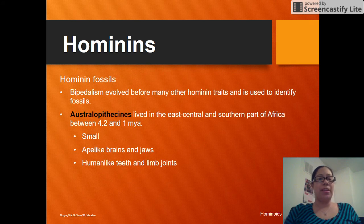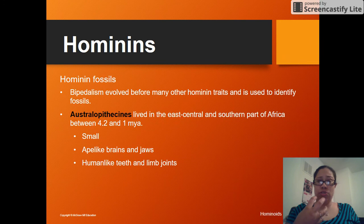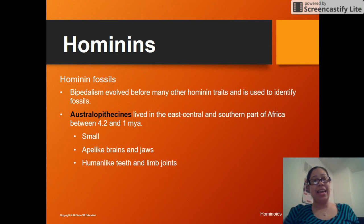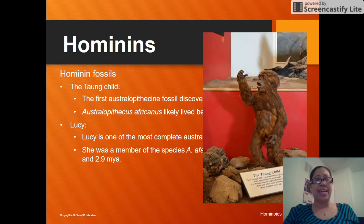Let's talk about the hominin fossils we've found, starting with the different Australopithecines. They appeared 4.2 to 1 million years ago. They're going to be very small, with ape-like jaws, facial structures, and ape-like brains, but human-like teeth, limbs, and joints. The first one we look at is Australopithecus africanus, also known as the Taung child — one of the first discoveries.